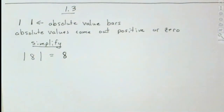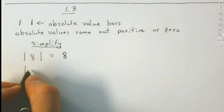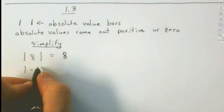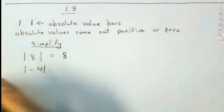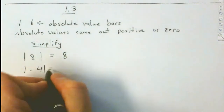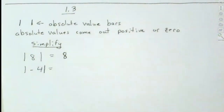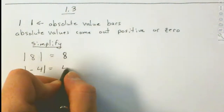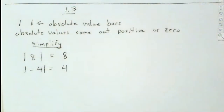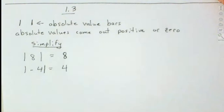What's the absolute value of 8? We take whatever's inside and make it come out to be positive. If it's already positive, it just stays positive. So the absolute value of 8 is 8. What about the absolute value of minus 4? The absolute value of minus 4 would be positive 4 — you make whatever's inside come out to be positive.